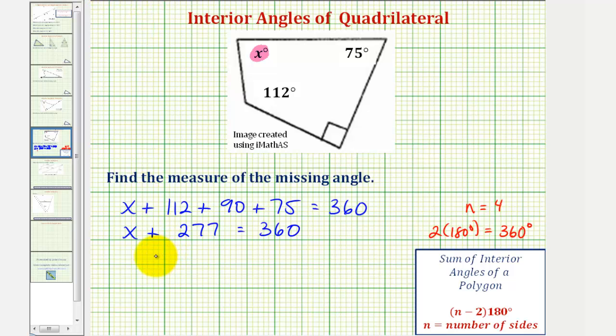And now we subtract 277 on both sides of the equation. And we have X equals 360 minus 277, which equals 83.